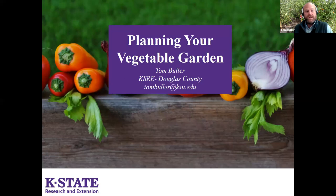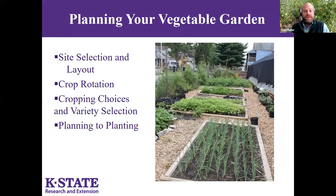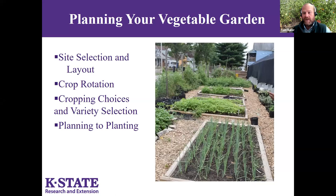Today we'll talk about planning your vegetable garden — one of my favorite things to do on cold winter days is flip through seed catalogs and think about what might happen this coming year. I'm going to walk through site selection and some general layout options, then crop rotation, then the nitty gritty of cropping choices and variety selection — what should you be looking for in those seed catalogs. Finally, we'll talk about next steps and moving from planning to planting.